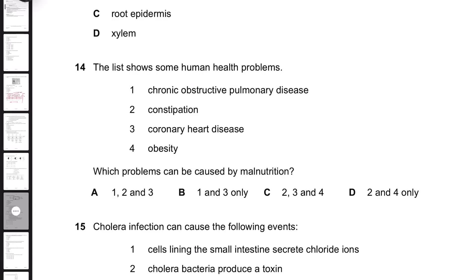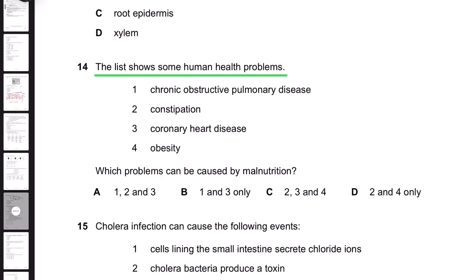Number 14. The list shows some human health problems. Which problems can be caused by malnutrition? The first option is chronic obstructive pulmonary disease, COPD.